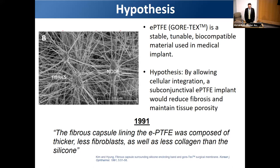The hypothesis was that ePTFE would allow cell integration and therefore create a porous bleb after glaucoma surgery, as opposed to an impermeable bleb. This was supported by previous work from 1991 noting that tissue surrounding ePTFE implants created better-looking tissue after filtering surgery in animal models. This was really the first systematic attempt to incorporate ePTFE into glaucoma implants by Gore — the leading manufacturer and experts in this material.